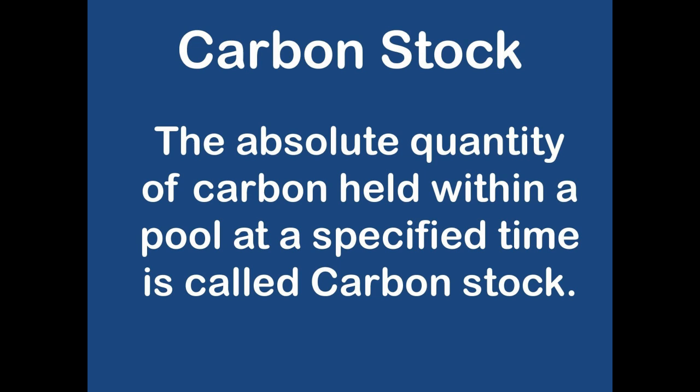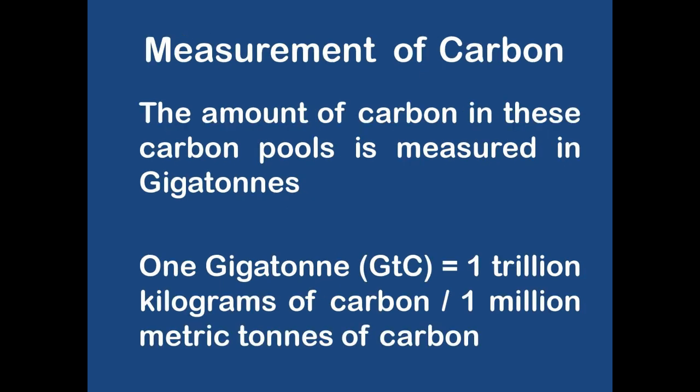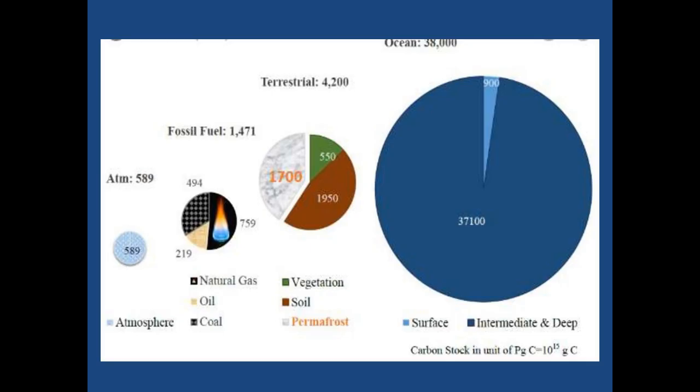The absolute quantity of carbon held within a carbon pool at a specified time is called carbon stock, and the amount of carbon in these carbon pools is measured in gigatons. Now let's move on to the types of carbon pools on Earth.